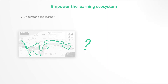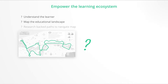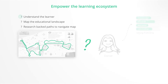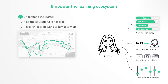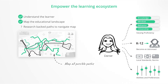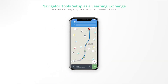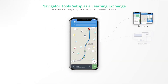But what if we could empower the learning ecosystem by providing a precise understanding of the learner, a map of the educational landscape, and research-backed paths to navigate that map? If the ecosystem could know the student's varying proficiency, their interests, local contexts, different learning abilities and preferences, and be given a research-backed map with all possible routes — they could provide personal GPS-like learning paths that significantly improve outcomes. This is what we have done: we have built free and open Navigator tools to empower the whole learning ecosystem.